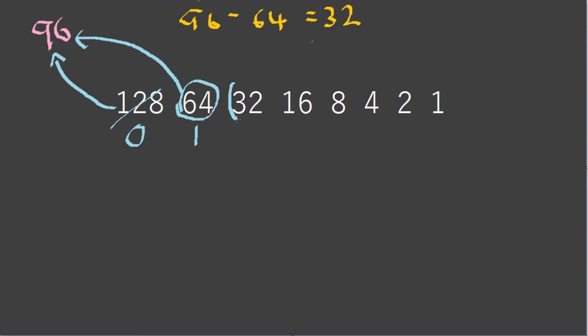Can 32 go into 32? Yes it can. Now 96 is now 0 because 32 minus 32 equals zero, so we don't need to do anything now because we have our number we want.